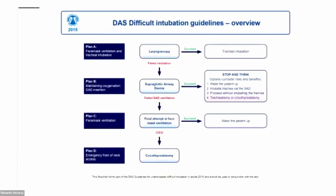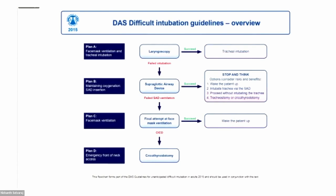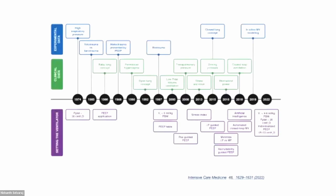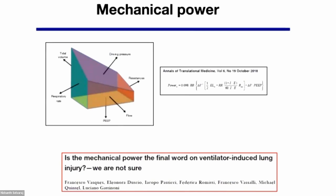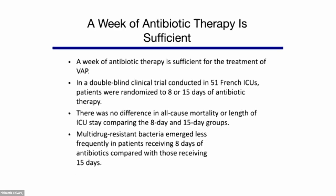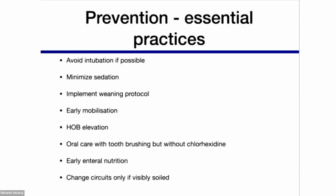If you don't succeed on the first attempt, refer to difficult intubation guidelines and the NAP4 review — your best attempt should be the first attempt. Different strategies have evolved for reducing ventilator-induced lung injury: keeping plateau pressures less than 30, prone positioning, and tidal volume of 4 to 8 ml/kg. Don't forget mechanical power, which plays an important role in causing ventilator lung injury. For VAP prevention: ventilation strategies, adjunctive strategies, hemodynamics, and pharmacological interventions. One week of antibiotics therapy is sufficient — no evidence that 15 days is essential, and 15-day courses may increase antibiotic resistance. Avoid intubation if possible, minimize sedation, promote early mobilization, and early enteral nutrition.